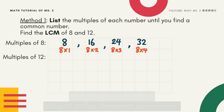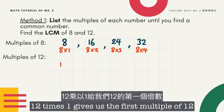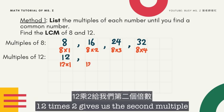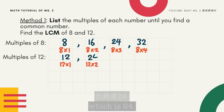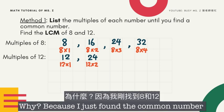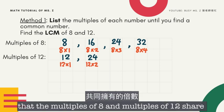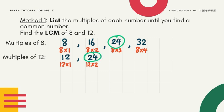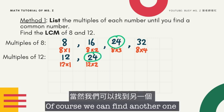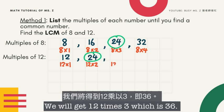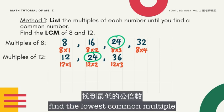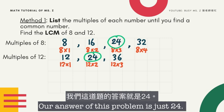Now let's move on to multiples of 12, following the same procedure. 12 times 1 gives us the first multiple, which is 12. 12 times 2 gives us the second multiple, which is 24. And I'm going to stop here, because I just found the common number that the multiples of 8 and 12 share, which is 24. So our answer is just 24.